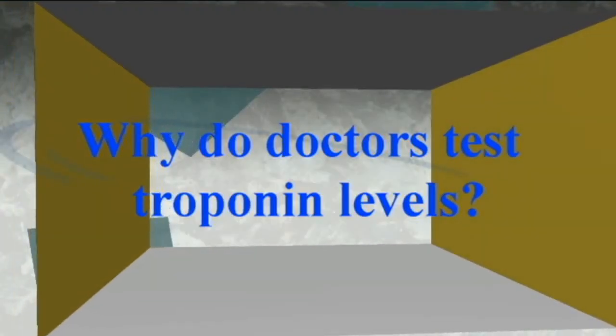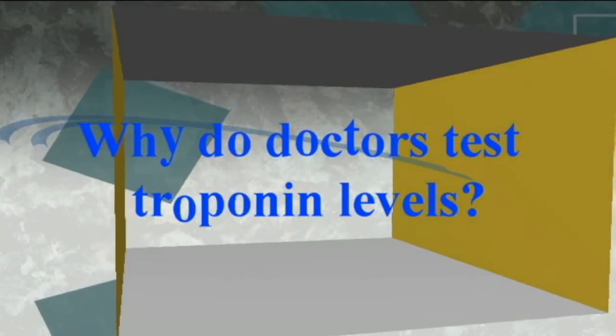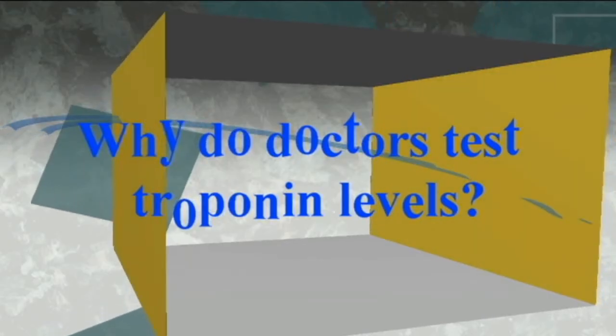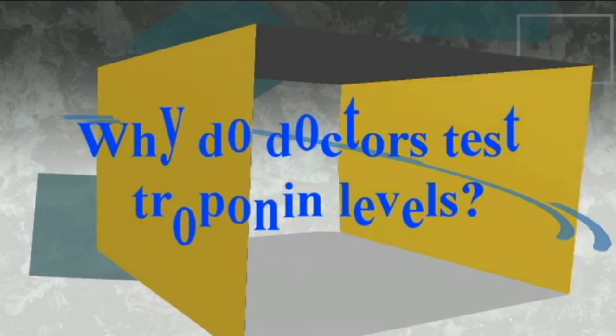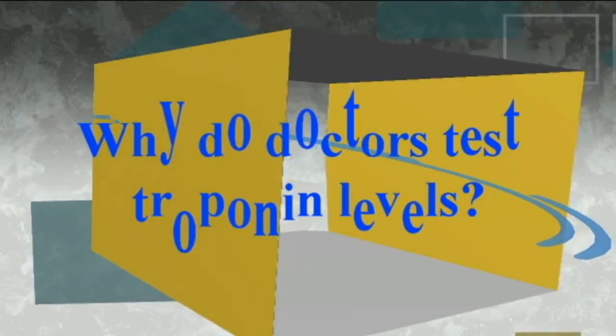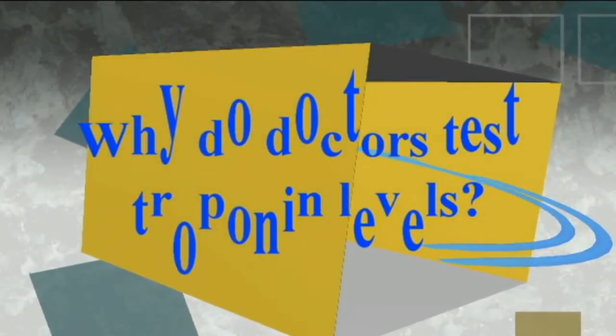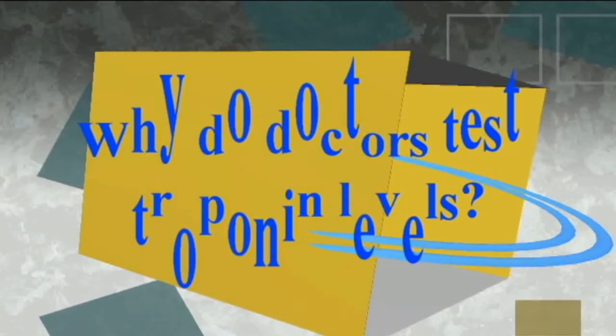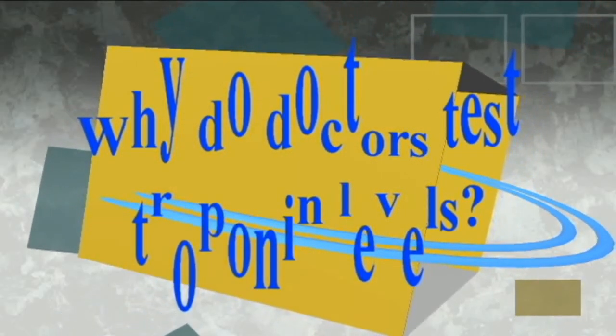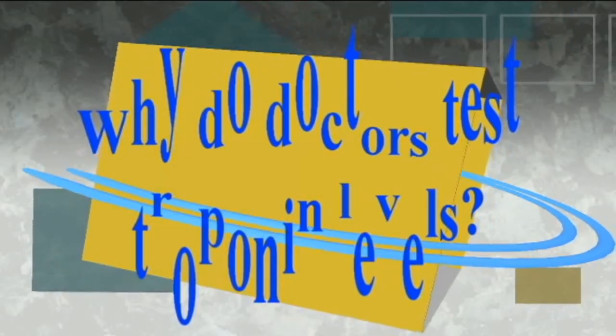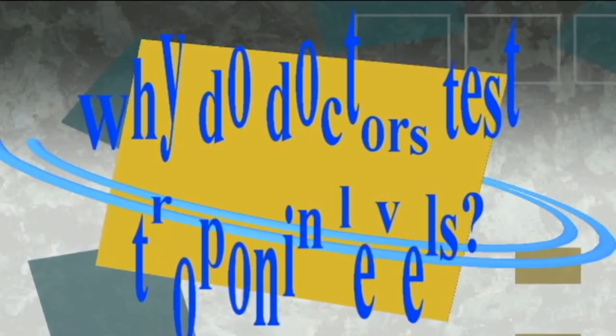What is the normal troponin range? Troponin levels are usually so low that standard blood tests are unable to detect them. Even small increases in troponin can indicate some damage to the heart. Significantly raised levels of troponin, particularly if they rise and fall over a series of hours, are a strong indication of a heart injury. The range for normal troponin levels can vary between laboratories, so it is best to discuss the results with the doctor who ordered the test.